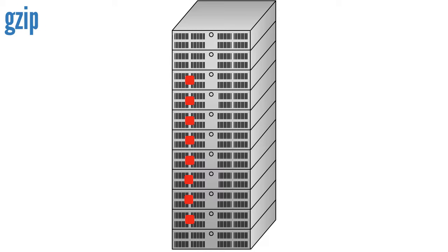Now consider a GZIP file whose compressed size is 1 gigabyte. As before, HDFS will store the file as 8 blocks. However, it's impossible to start reading at an arbitrary point in a GZIP stream, so it's not possible for a map task to read its block independently of the others. A single map will need to process all 8 HDFS blocks, most of which will not be local to the map, so the job will take longer to run.